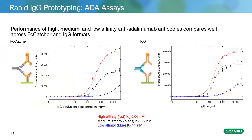Another common application for our anti-idiotypes is making anti-drug antibody assays that simulate immune response. In a comparison of three clones of low, medium, and high affinity, using the classical ADA bridging format assay — where you immobilize the drug, label the drug, and an anti-drug antibody bridges immobilized and labeled drug to generate signal — the performance is very similar regardless of whether they're fully mammalian-expressed IgG format or E. coli-expressed format fused to an Fc domain. The low, medium, and high affinity controls perform as expected.